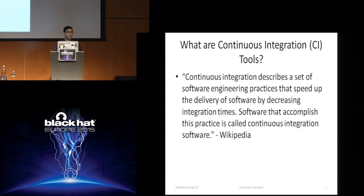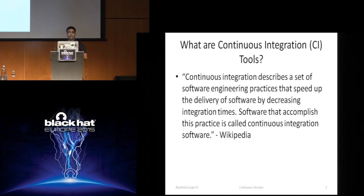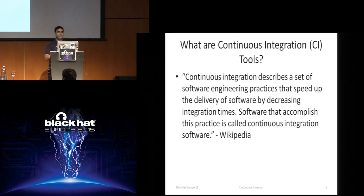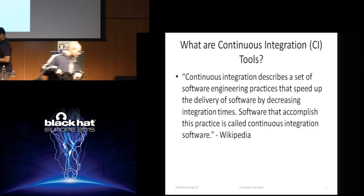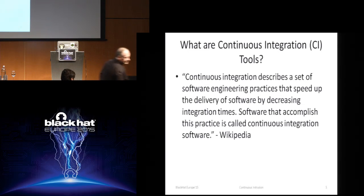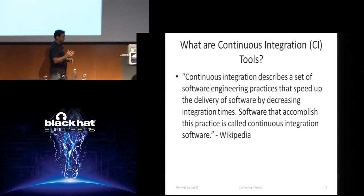First of all, what are continuous integration tools? I picked this up from Wikipedia: 'Continuous integration describes a set of software engineering practices that speed up the delivery of software by decreasing integration times.' Software that accomplishes this practice is called continuous integration software, or a CI tool. So CI tools are used to decrease the time of integrating code of different developers.